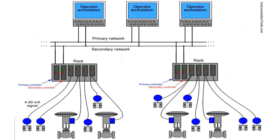This is a representation of a basic DCS with operator workstations, a network, and a rack with PLCs. The controllers take sensor data from sensors and control valves. Importantly, there is a primary and a secondary controller — in many DCS systems you build in redundancy for resilience, because downtime is very costly. This is achieved through dual networks, dual controllers, and so on.